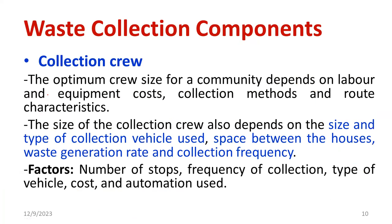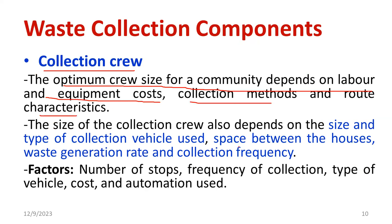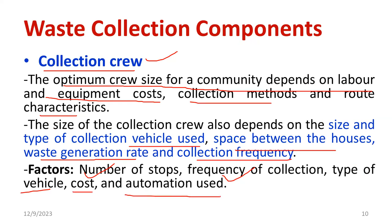Another important factor is the collection crew — the operating personnel, generally called the collection crew. The optimum crew size of a community depends on labor and equipment cost, collection methods, and route characteristics. The size of the collection crew also depends on the size and type of collection vehicle used, space between houses, amount of waste generation, and collection frequency. Factors affecting the collection crew include number of stops, frequency of collection, type of vehicle — compactor or non-compactor — cost for collection, and whether automation is used, such as conveyors or automated tools.